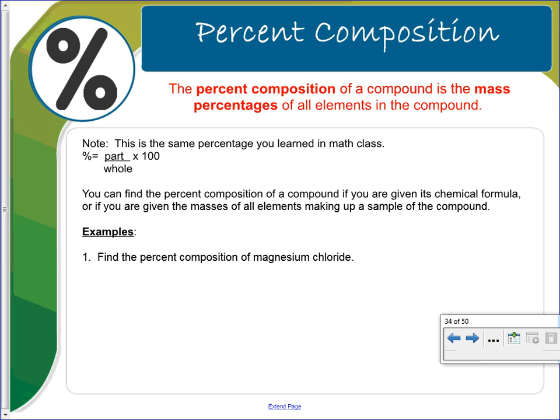When we're doing these percentages, it's the same as what you learned in math class. It's the part over the whole times 100. What's unique to chemistry is where are we getting this part and where are we getting this whole. So you can find the percent composition of compound if you're given its chemical formula or if you're given the masses of all the elements making up a sample of the compound.